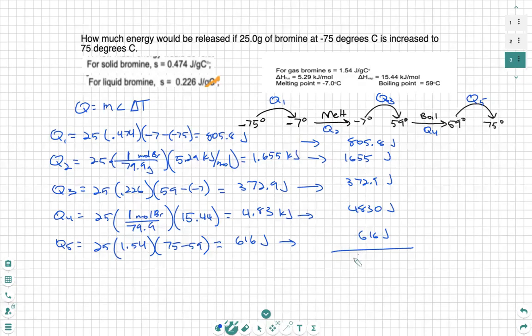And there we go. This total would take 8,279.7 joules to convert 25 grams of bromine solid at negative 75 degrees all the way to bromine gas at 75 degrees Celsius.